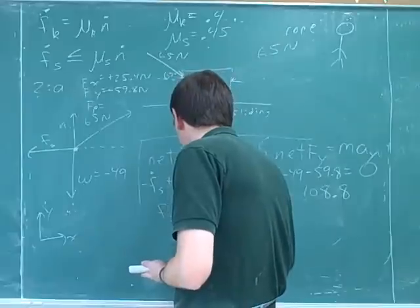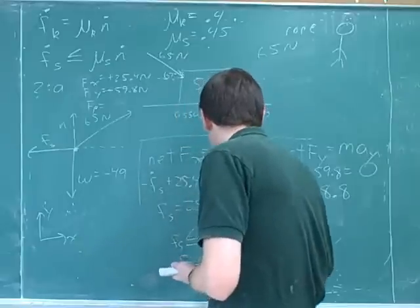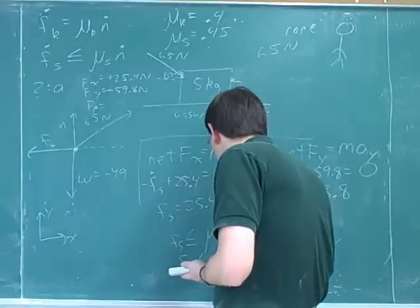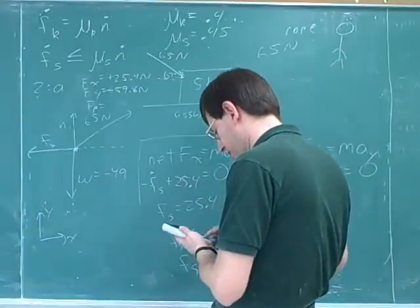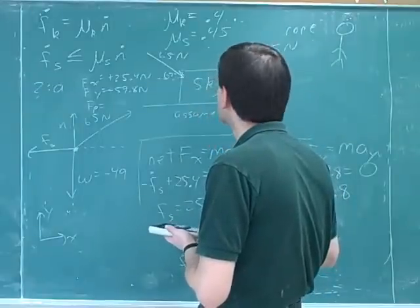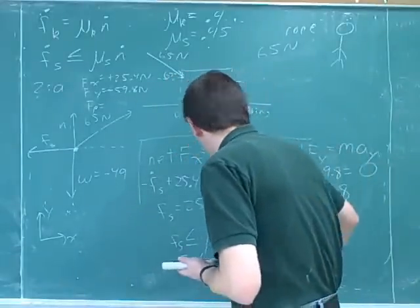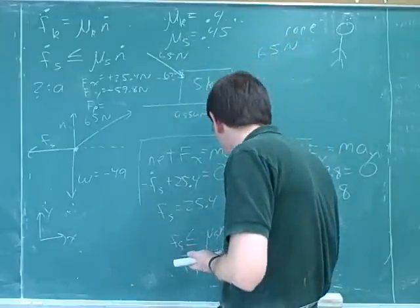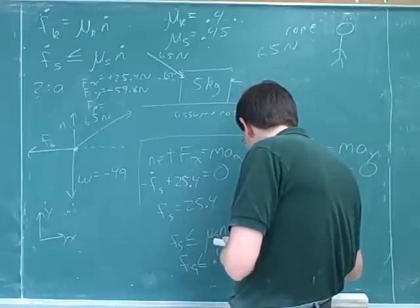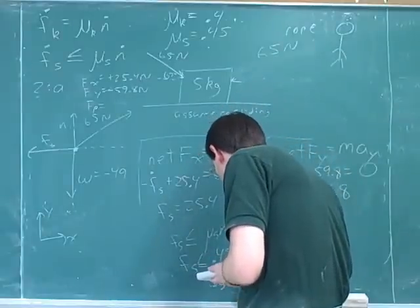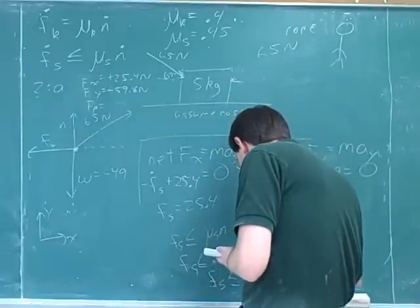Good. Yeah, sorry. So we know that f_s is supposed to be less than mu_s times n. So f_s is supposed to be less than 0.4 times 108.8. 0.45, I think. Thank you. Yeah, we should be using static friction because our assumption is that we're not moving. All right, so that's 48.9, or about 49.